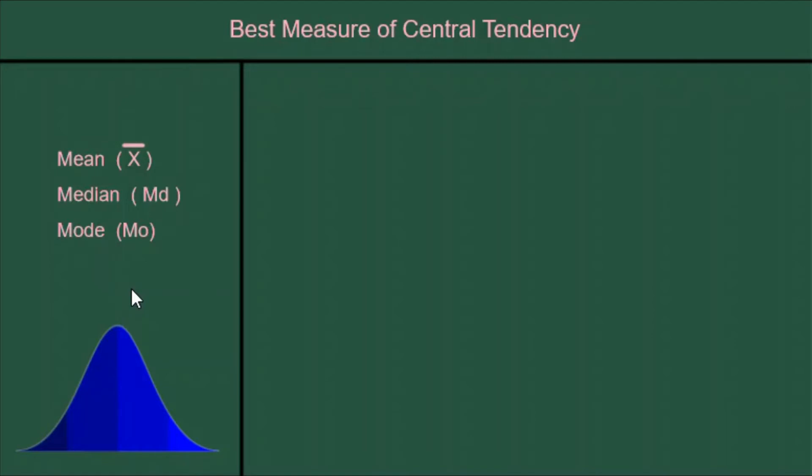So what we like to do in statistics is choose one of the three measures of central tendency, and we want to choose the one that is the most reliable, the most reliable at being in the center.